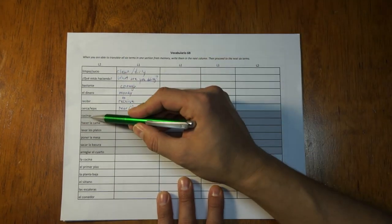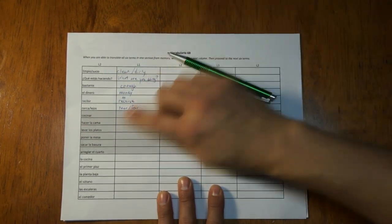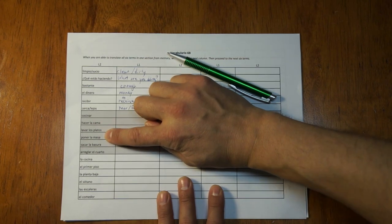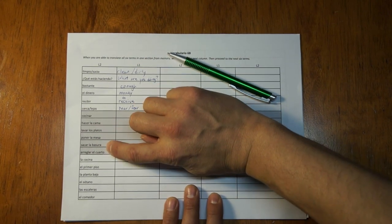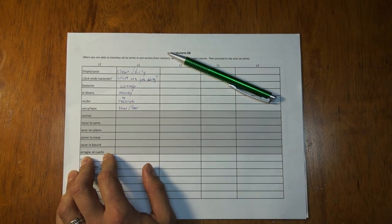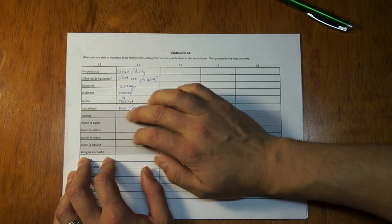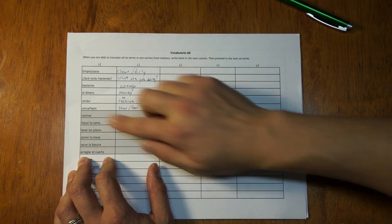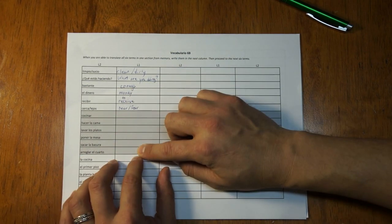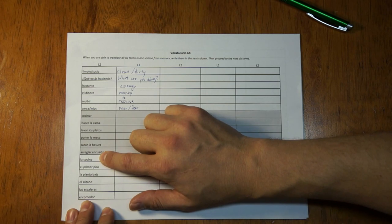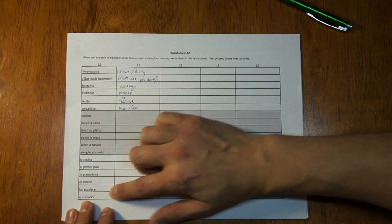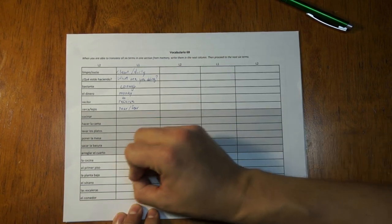Let's go on to the next six terms. I would do this again with cocinar. Pen down. Hacer la cama. Lavar los platos. Poner la mesa. Sacar la basura. Arreglar el cuarto. Again, I have my list somewhere else. Not on this page, but for the first time going through. And I have to say all six before I can write them. On to the next one. These six words. I have to say all six before I'm allowed to write them.